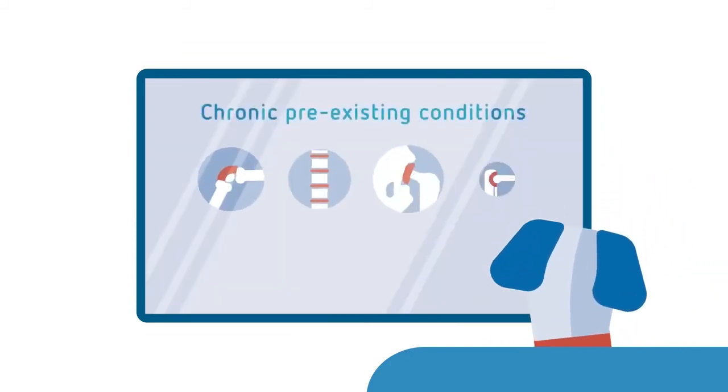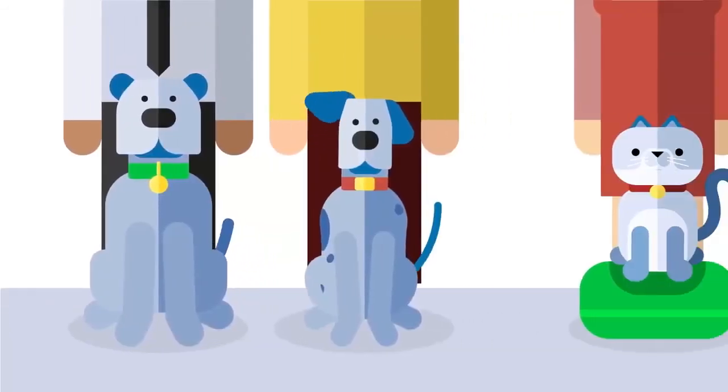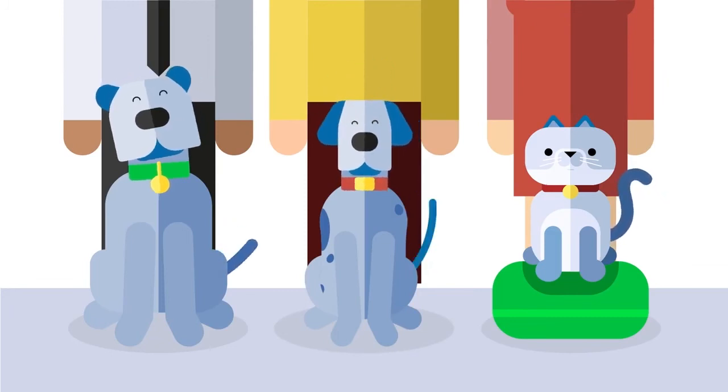As chronic pre-existing conditions require ongoing care and were known before the purchase of a pet insurance policy, they will never be eligible for cover. This helps keep pet insurance fair for all pet parents, helping more pets get the veterinary care they need when they experience an unexpected health hiccup.